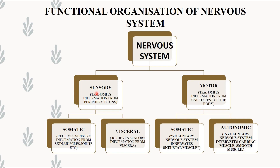This is a hierarchy chart of the nervous system. The nervous system is broadly classified into sensory and motor. Sensory is further divided into somatic and visceral. Sensory transmits information from peripheral organs to CNS — somatic receives sensory information from skin, muscles, and joints, while visceral receives sensory information from viscera. Motor transmits information from CNS to the rest of the body parts, and somatic voluntary nervous system innervates skeletal muscle.